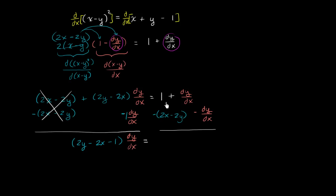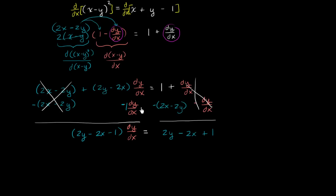On the right side, the dy/dx cancels and we're left with 1 minus 2x plus 2y, or equivalently 2y minus 2x plus 1. To solve for dy/dx we divide both sides by (2y minus 2x minus 1). The hardest part was really the algebra. We get dy/dx equals (2y minus 2x plus 1) over (2y minus 2x minus 1).